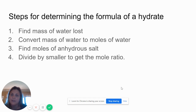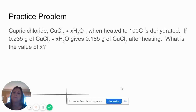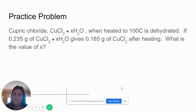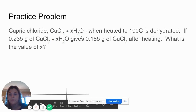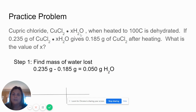These are the steps to solve a hydrate problem: find the mass of water lost, convert the mass of water to moles, find moles of your anhydrous salt, then divide by the smaller number to get a mole ratio. These steps look familiar — it's similar to finding an empirical formula. For example, cupric chloride (CuCl₂) has some amount of water. If we had 0.235 grams of copper chloride and after heating had only 0.185 grams, what is the value of x in the formula?